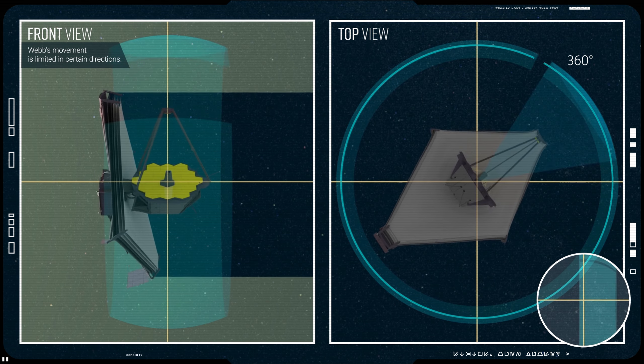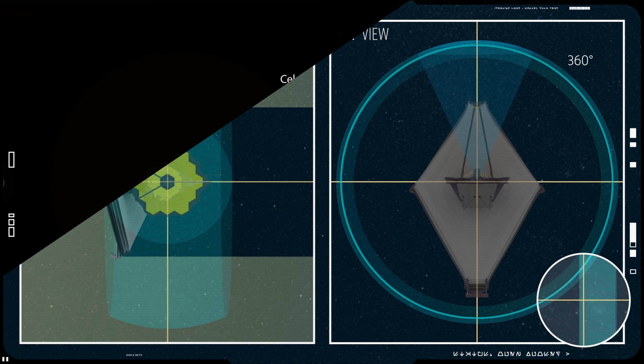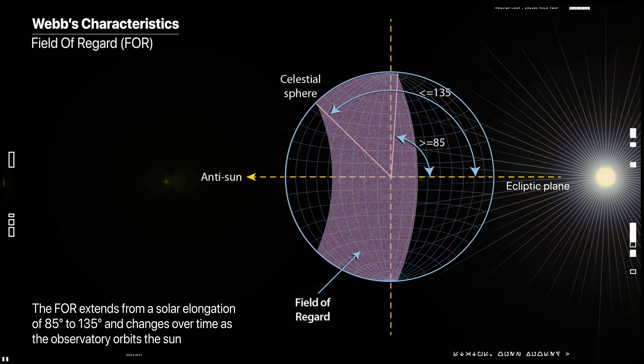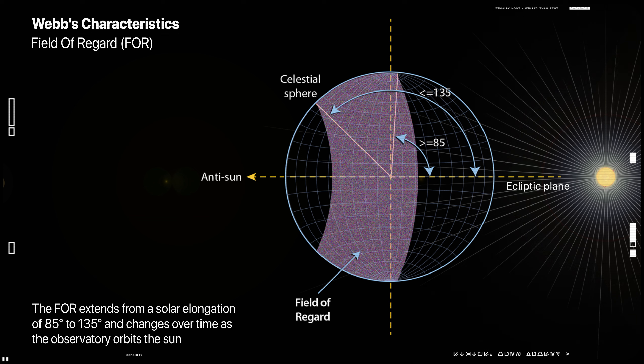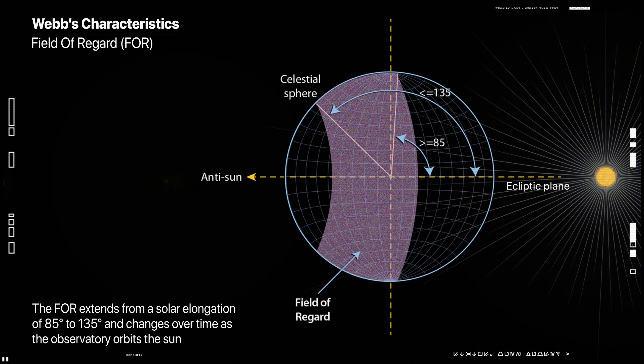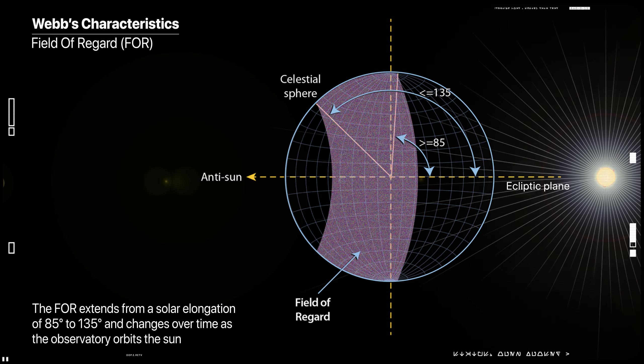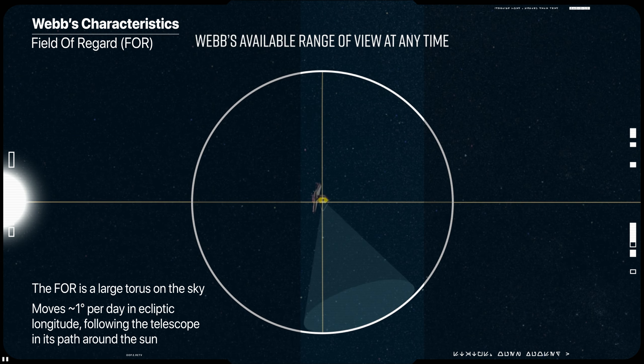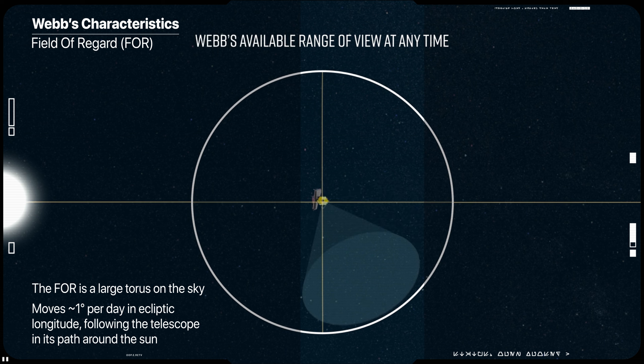The FOR is defined by the allowed range of bore-side position angles for the observatory relative to the sun line, which must remain in the range 85 degrees to 135 degrees at all times to keep the telescope behind the sunshield. Thus, the FOR is a large torus on the sky that moves roughly one degree per day in ecliptic longitude, following the telescope in its path around the sun.